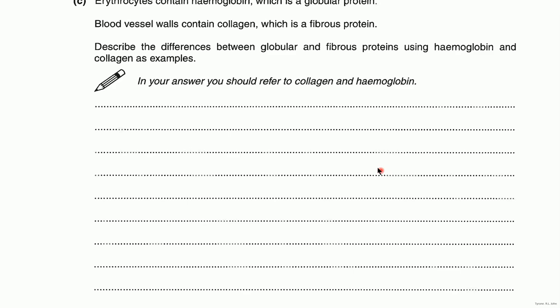With fibrous proteins they form long chains and that means they're insoluble. With haemoglobin, they are globular — they don't have long chains, they form a round globular structure which is soluble. Collagen of course is strong; haemoglobin isn't. There's no structural aspect to haemoglobin.